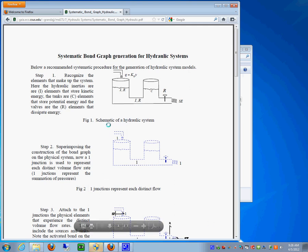Now let's take a look at the hydraulic systems. So this is the systematic procedure for doing hydraulic systems. We have a simple system with two tanks, a valve and some discharge in here and a source over here.